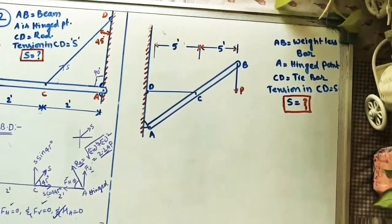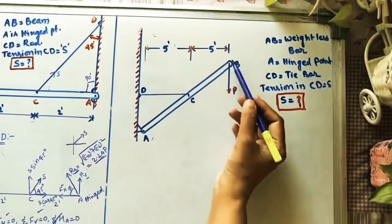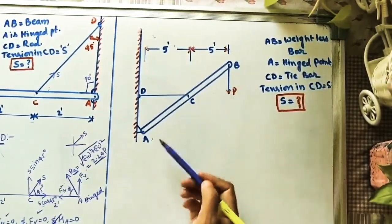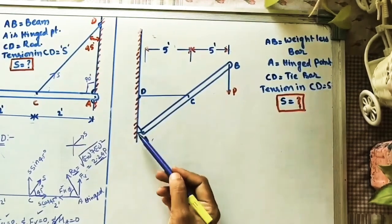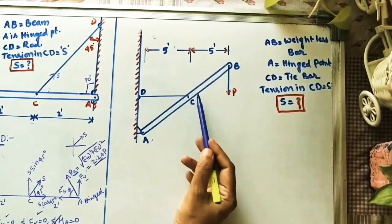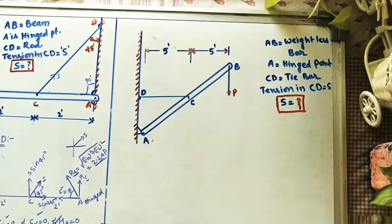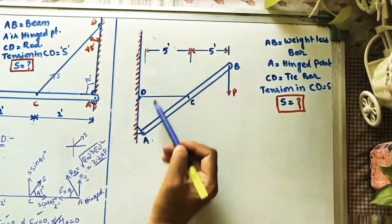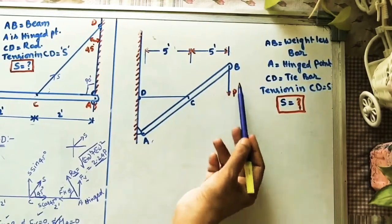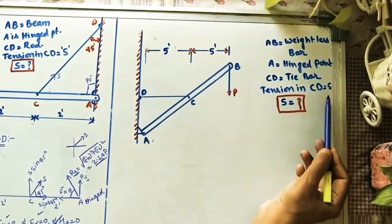Third problem: AB bar is given, it has less weight so we can consider it a weightless bar. At point A it is hinged, and CD is a tie bar. We are applying force P here. The lengths are given: from A to C horizontal distance is 5 inches, C to B horizontal is 5 inches. We have to find tension in CD.